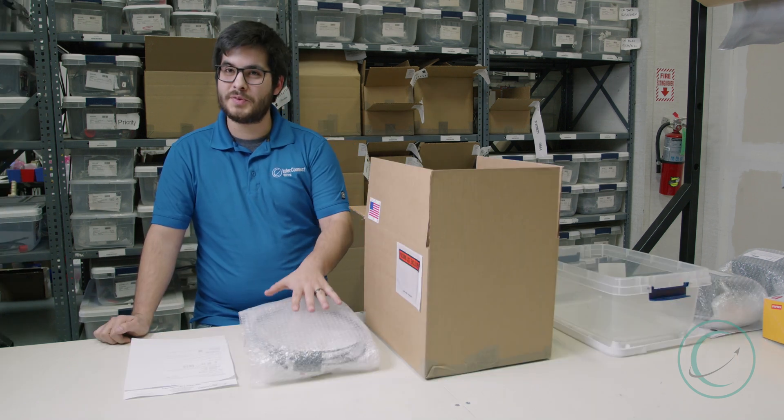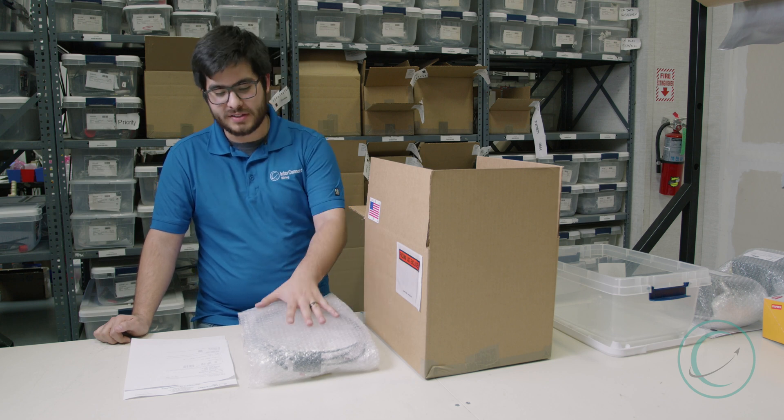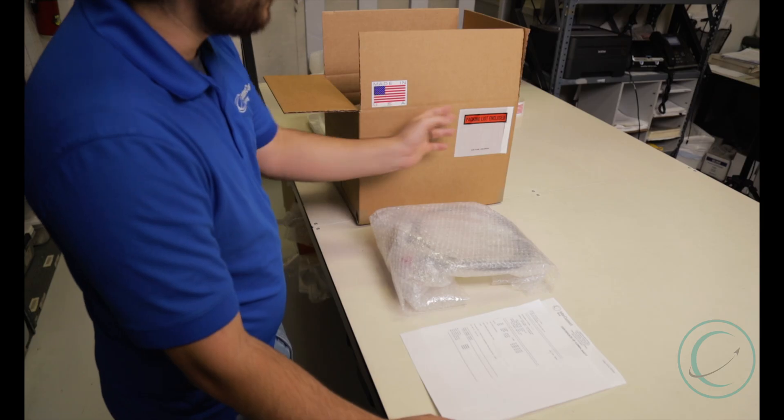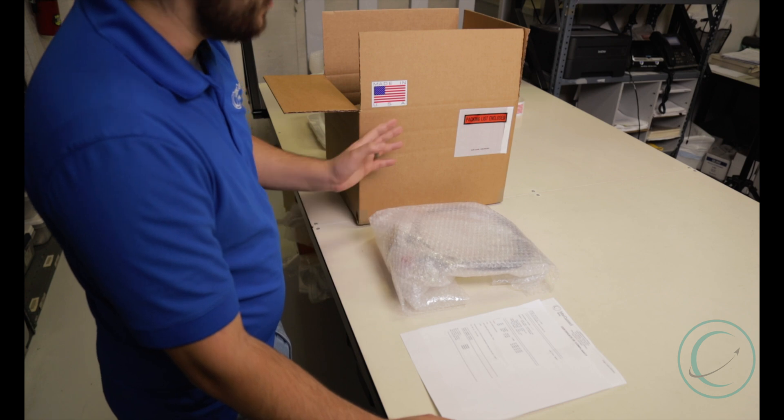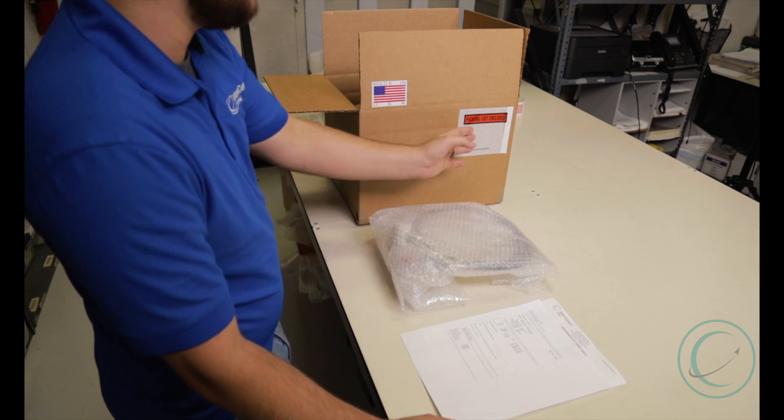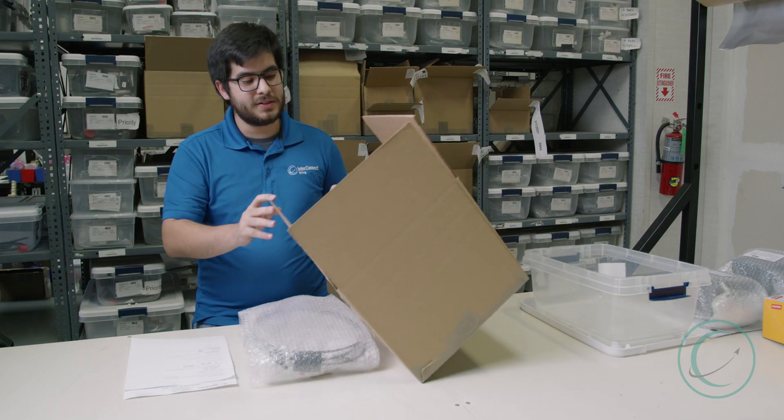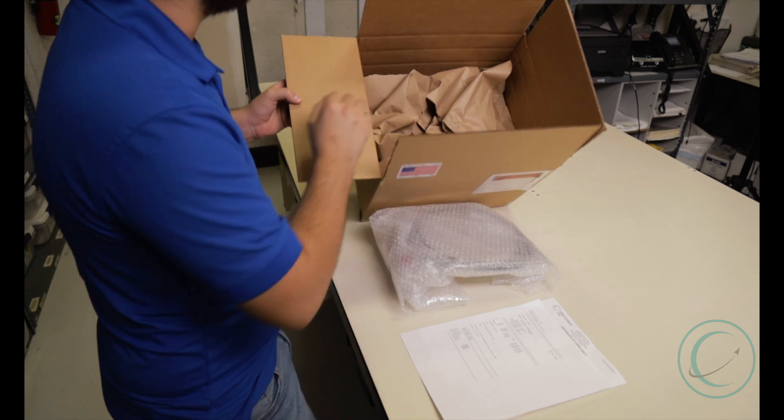So after the harness has been wrapped in bubble wrap, we then prepare a box for it according to the size and shape of the harness. There are some requirements for what needs to go on the box, but for this demonstration, we just put Made in USA and our packing list. On the bottom of the box, we have packing paper to secure the bottom of the harness.